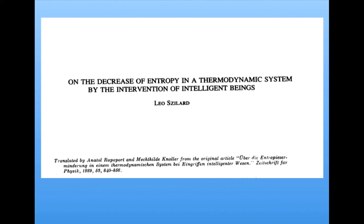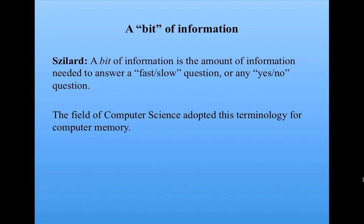This link has become fundamental in many areas, but it took a conceptual leap for Szilard to make it. Maxwell didn't see the intelligence or the observing powers of his demon as related to the thermodynamics of the system. There was a strong intuition that the physical realm of the gas and the mental realm of the demon were wholly separate in terms of energy. But Szilard saw that accounting for the measurement process — in which the demon decides whether a particle is fast or slow — is essential in understanding the thermodynamics of the entire system. Szilard also came up with the notion of a bit of information, where a bit measures the amount of information needed to answer a fast-or-slow, or yes-or-no, or any question that has two possible answers. The field of computer science adopted this terminology of bits for describing computer memory, which consists of ones and zeros.